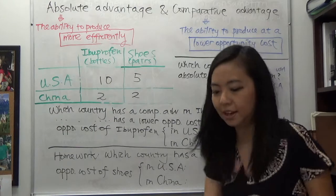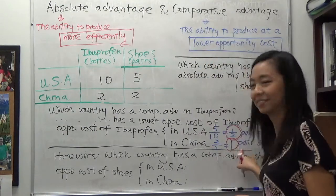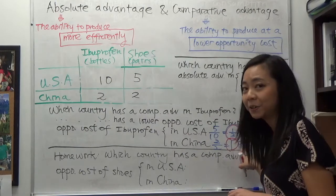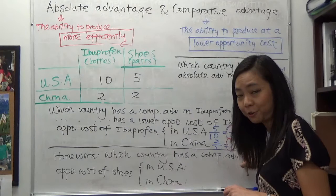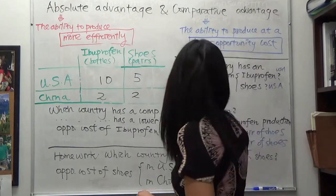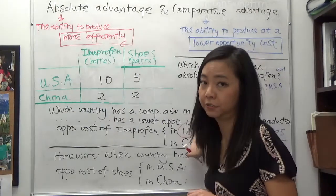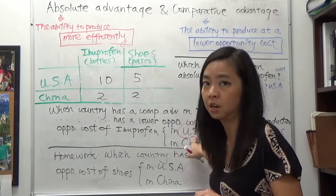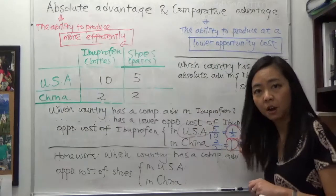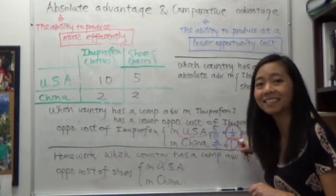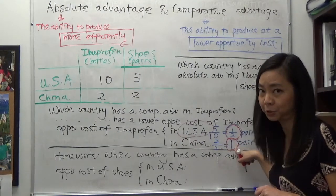Now it's obvious that one half is lower than 1. So it's clear which country has a comparative advantage in the production of ibuprofen — that is the US, because the opportunity cost of ibuprofen production is lower: half a pair of shoes compared to one pair of shoes in China.